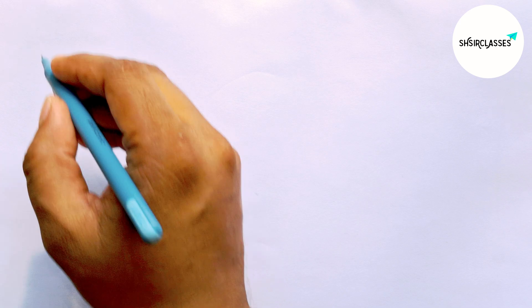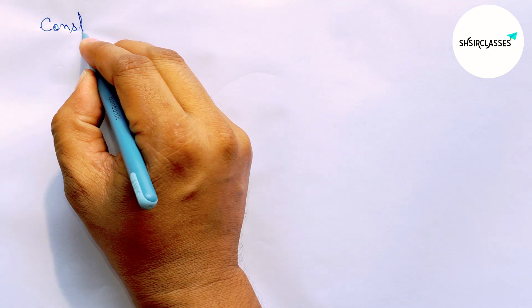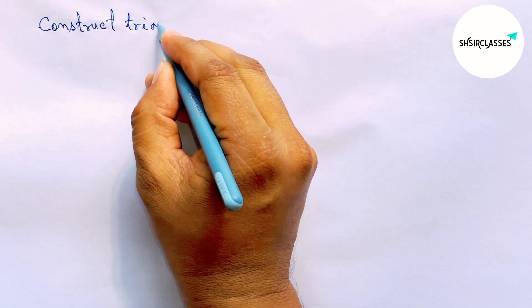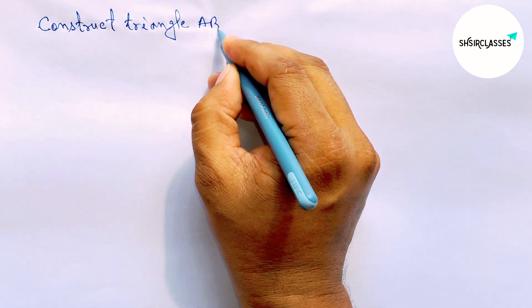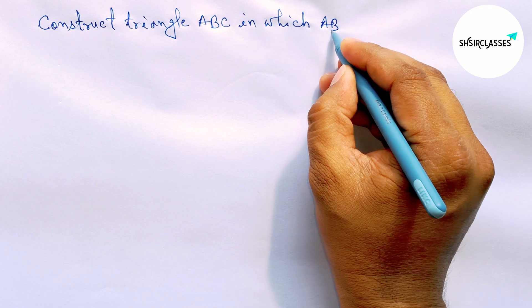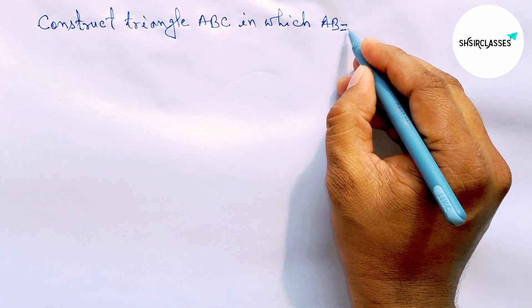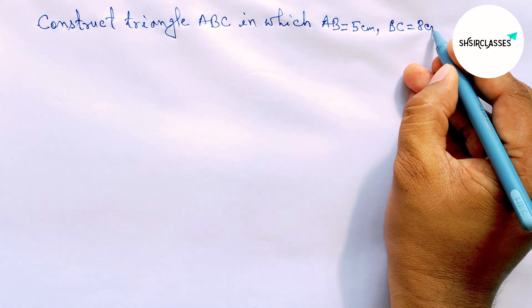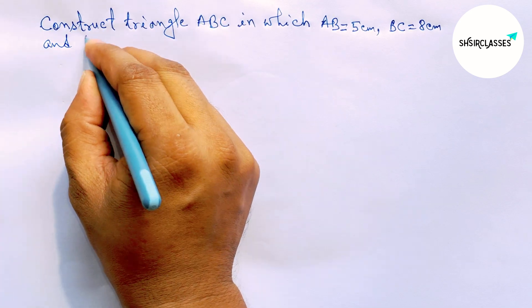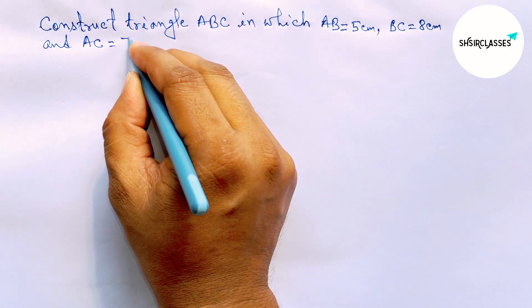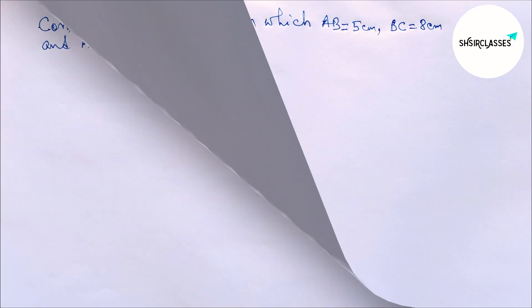Hi everyone, welcome to say share classes. Today in this video we will construct triangle ABC in which AB equals 5 centimeters, BC equals 8 centimeters, and AC equals 7 centimeters in an easy way. Please watch the video till the end. So let's start.